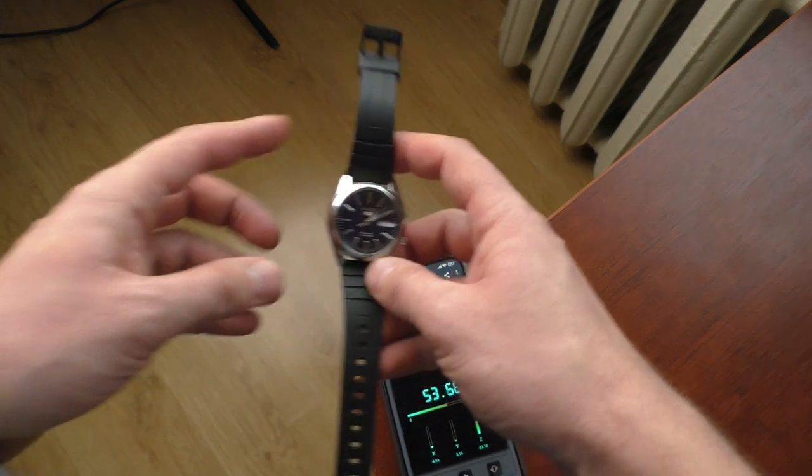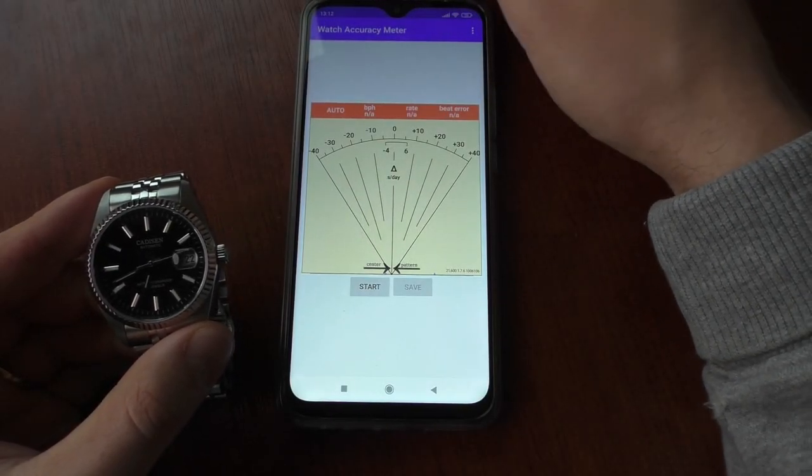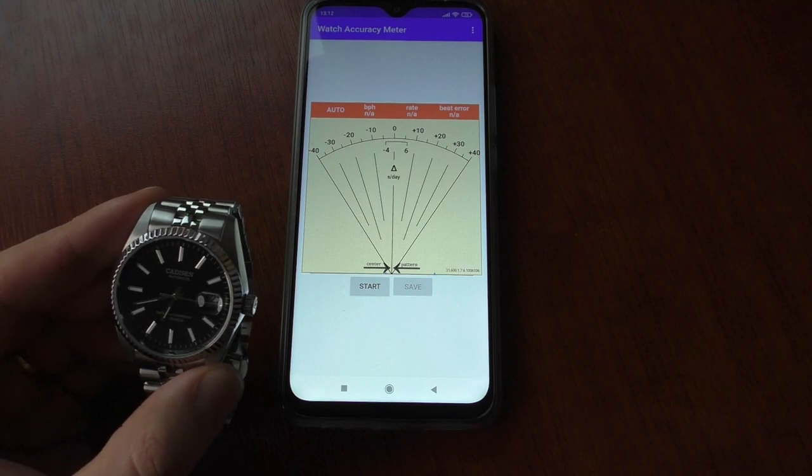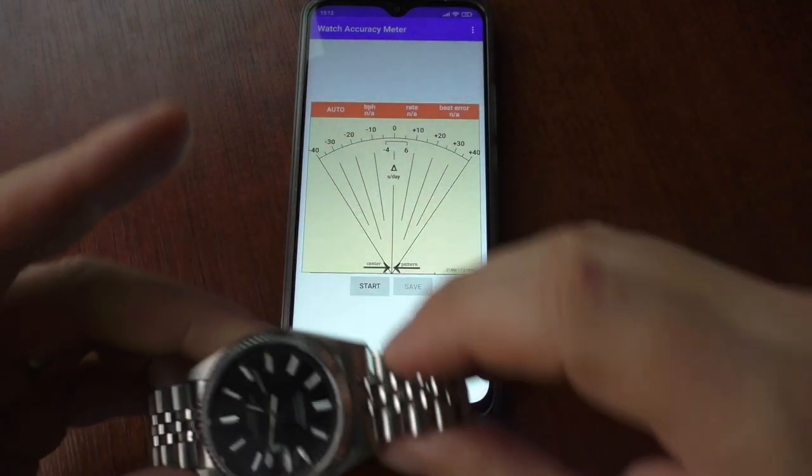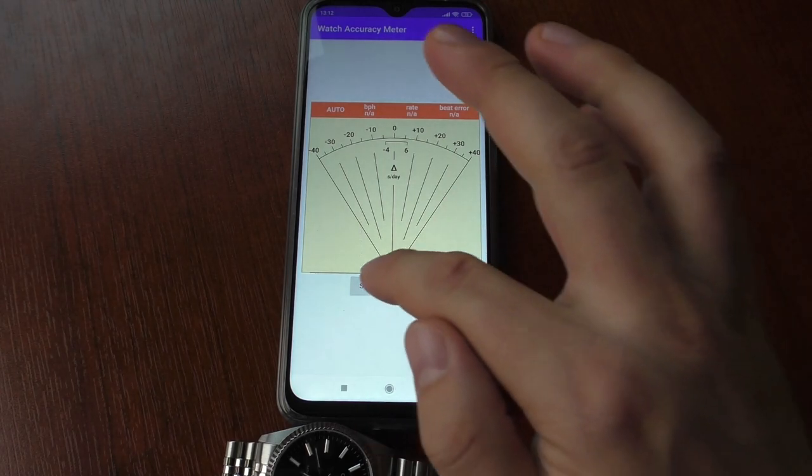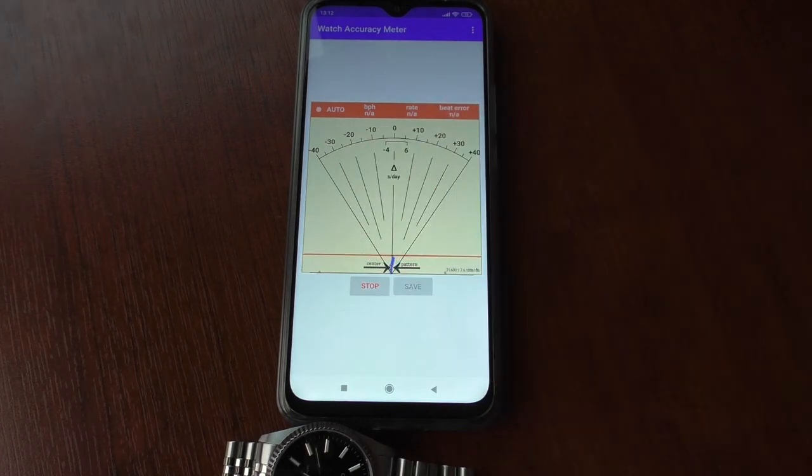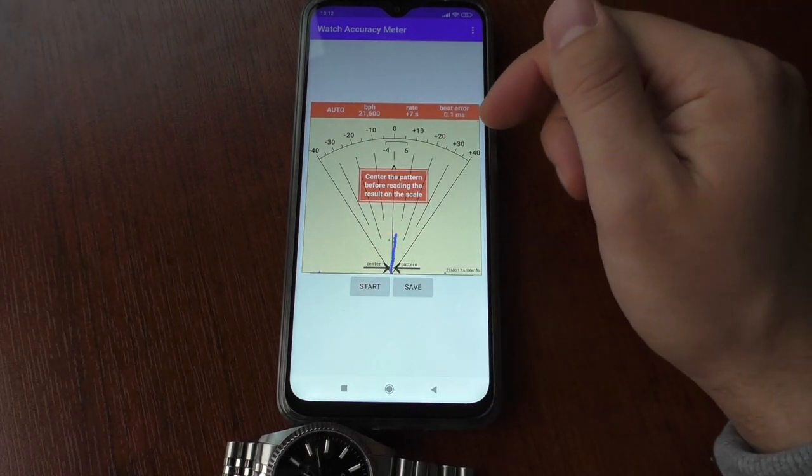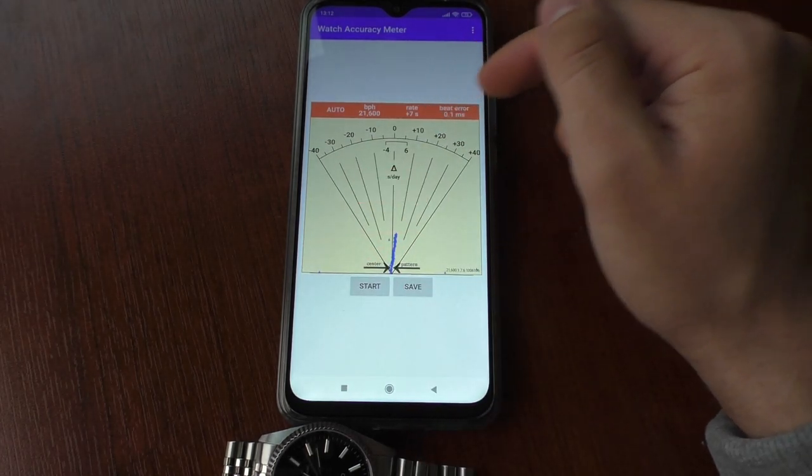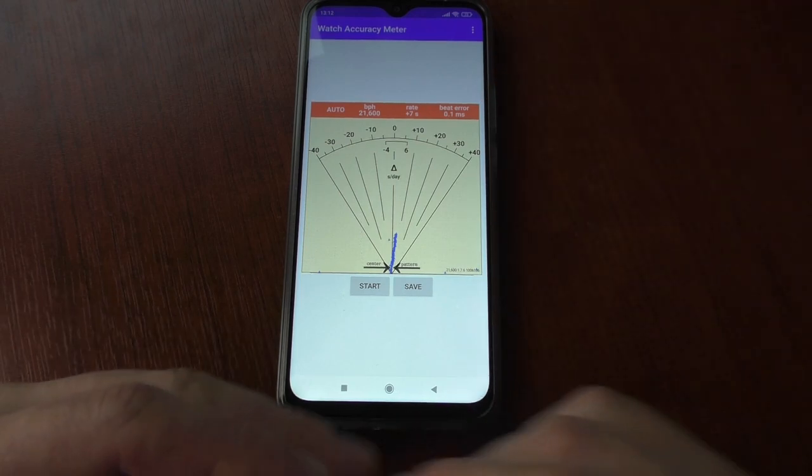Also let me show you the time grapher. As a time grapher I use this watch accuracy meter app. It doesn't show the amplitude but I see the beat error and the rate. First let's try the non-magnetized watch, how it should look like. This is a very healthy watch, plus 7 seconds and beat error just 0.1 milliseconds.